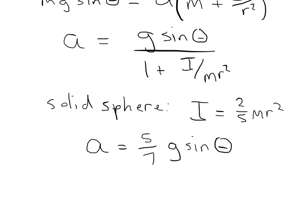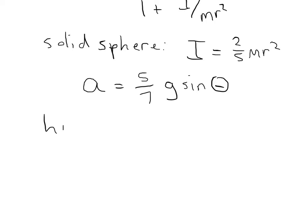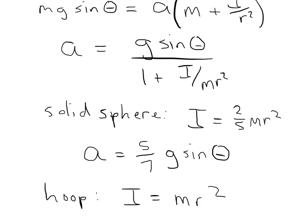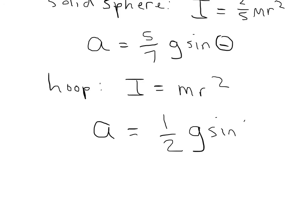For another example, consider a hoop — like a hula hoop — which has all its mass at the rim, so its moment of inertia is mr². Looking at our expression, that gives g sinθ divided by (1 plus mr²/mr²), which is g sinθ divided by 2. So the acceleration of a hoop rolling down a slope is 1/2 g sinθ.